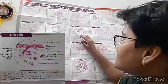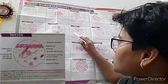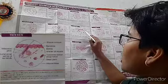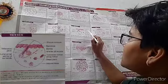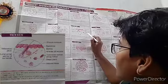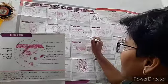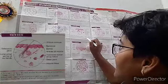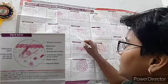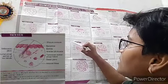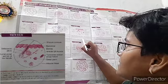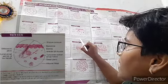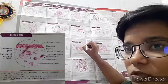Now thin skin. Visible structures include sebaceous gland, longitudinal and transverse sections of hair follicles, stratum corneum, epidermis, dermis, arrector pili muscles, sweat glands, and adipose tissue. Thin skin has a thin epidermis made up of keratinized stratified squamous epithelium, and the stratum corneum is thin. Hair follicles, sebaceous glands, and sweat glands are present in the dermis. Thin skin is found in all other parts of the body except palms and soles.